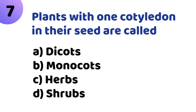Seventh question: Plants with one cotyledon in their seeds are called — Option A: Dicots. Option B: Monocots. Option C: Herb. Option D: Shrub. The correct answer is Option B, Monocots.